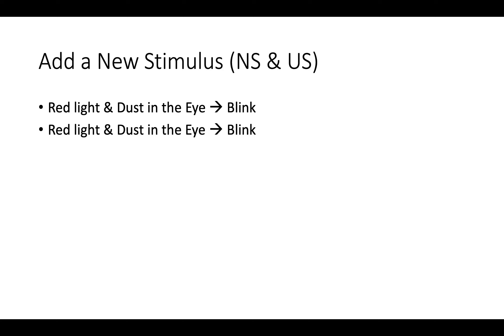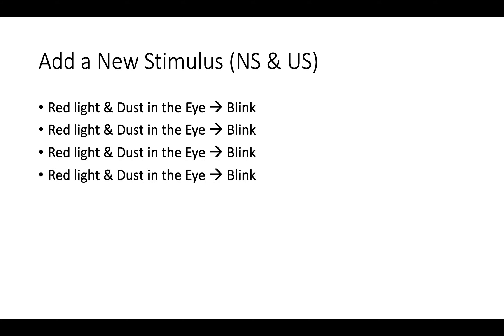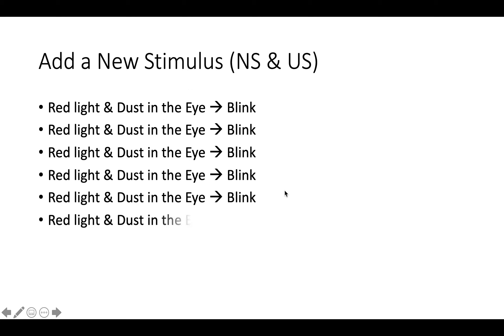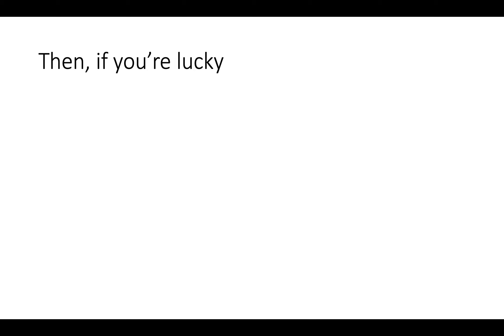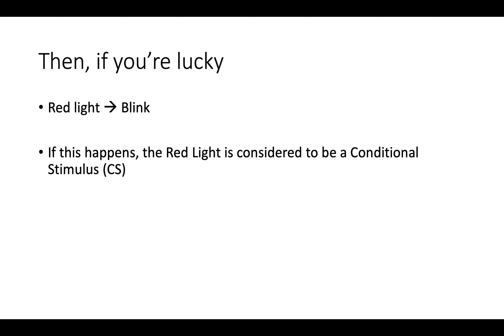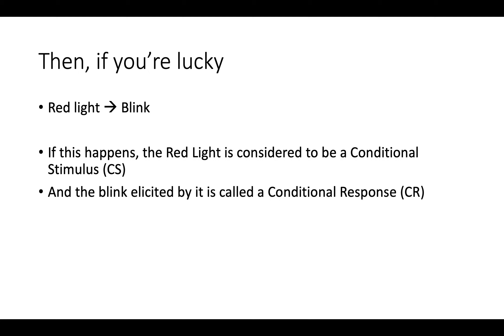In the Pavlovian conditioning arrangement, I add a new stimulus. I'll present the red light, blow dust in your eye, and you will blink. If I do that again, you'll blink. There is one important feature about Pavlovian conditioning — the time in between these events. We call each one of these a trial. If we do this a few times, what we find is that if we play the red light, you will blink. The red light is now a conditional stimulus, and the eye blink it elicits is called a conditional response.